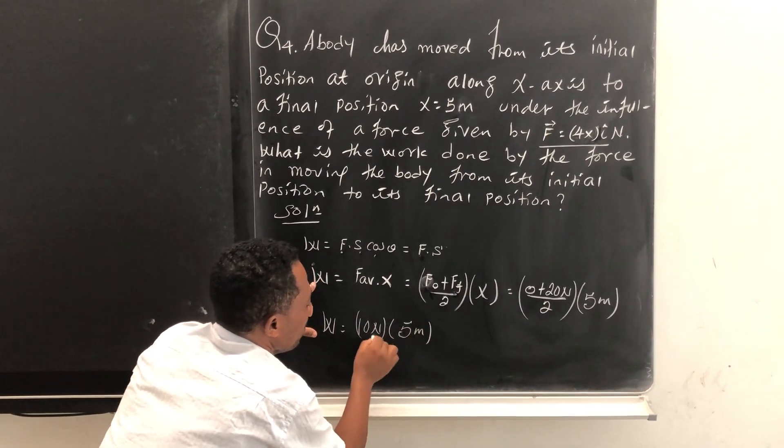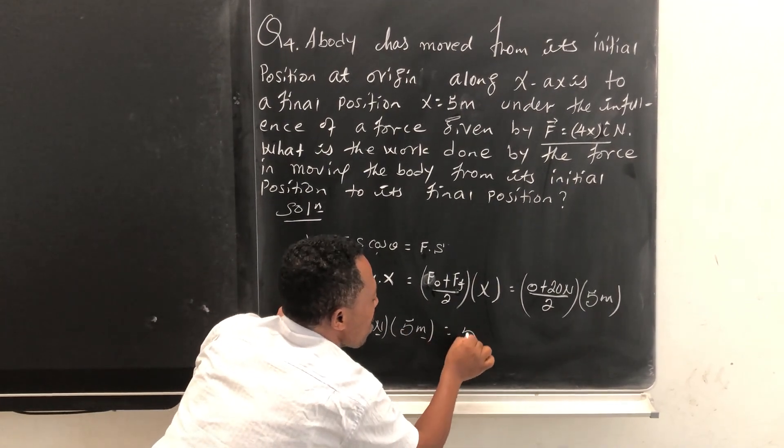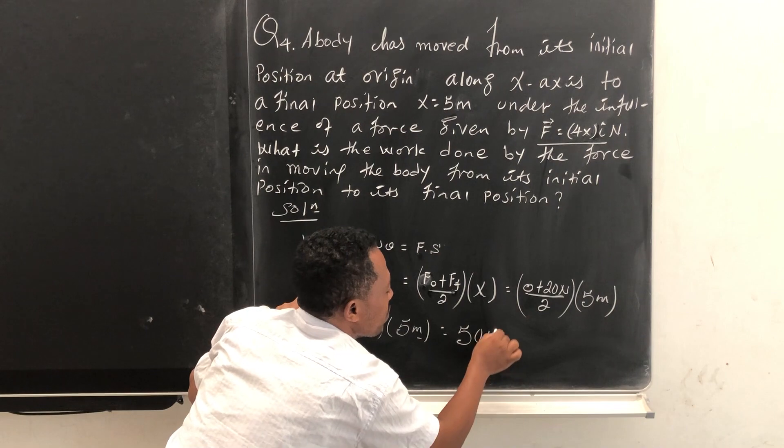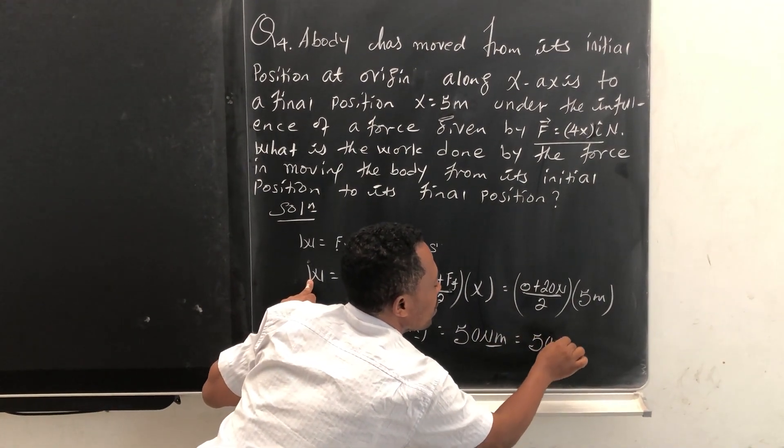Newton meter is joule. Ten times five, which becomes 50 joules.